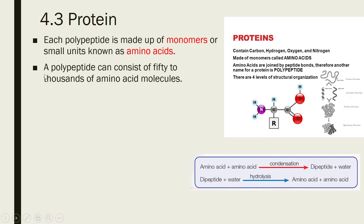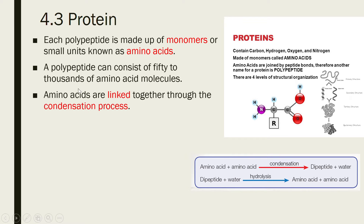One polypeptide chain can consist of 50 to thousands of amino acid molecules — 50 to thousands of these small units in one polypeptide.